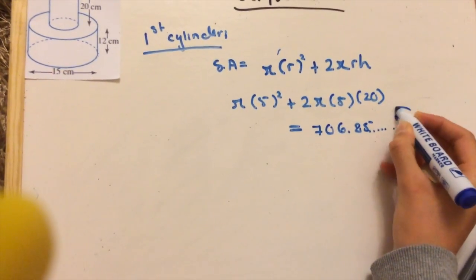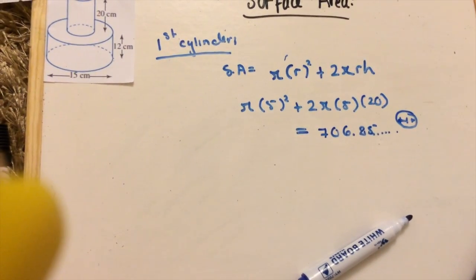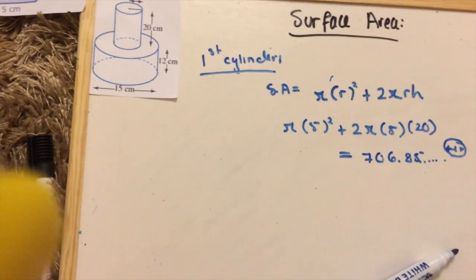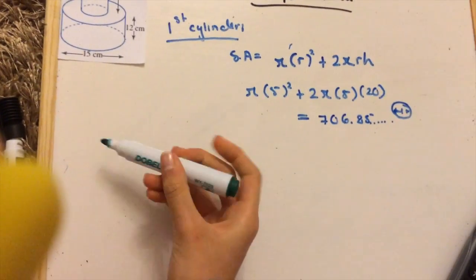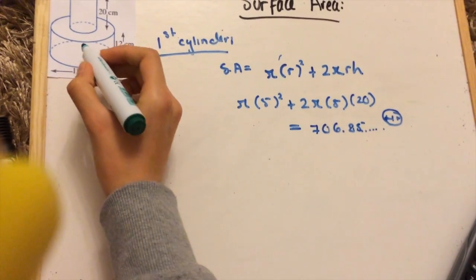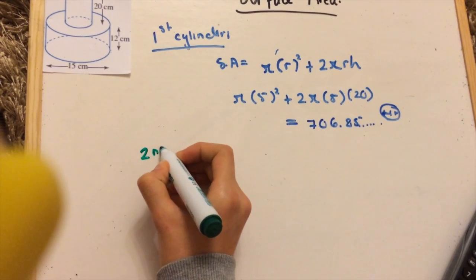Now we're going to go ahead and find our second cylinder. Again, I'm not going to calculate the top circle right now, but I'm going to add the circle and then subtract the little circle from it to get the area around.